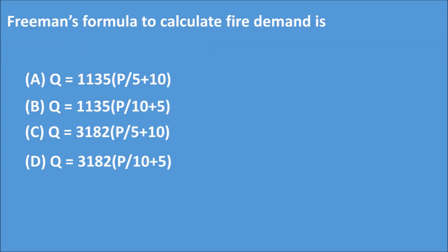Q5: Freeman's formula to calculate fire demand. The correct answer is Option A. Freeman's formula to calculate fire demand is Q = 1135 × (√(P/5) + 10).